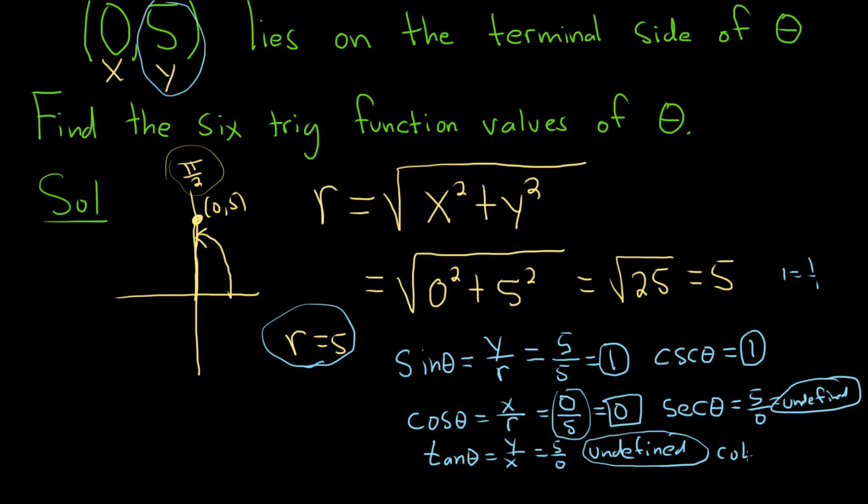And the reciprocal of tangent is cotangent. So it would just be x over y, x here is 0, y is 5, so we just end up with 0. Whenever you have 0 up top, the whole thing becomes 0. And those would be the six trig function values.